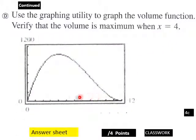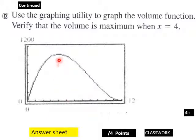Using the graphing utility to graph the volume function, you will see a local maximum. When x equals 4, f of x is at that maximum — shown on the graph at x equals 4, giving you 1024 cubic units. That is your maximum volume.